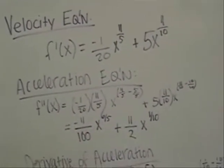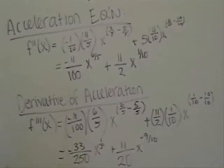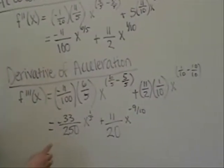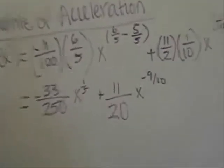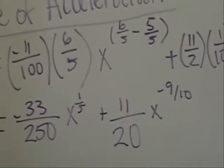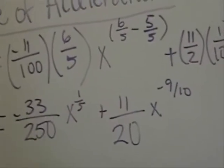Now to find the derivative of acceleration we simply use the same process. Our final derivative of acceleration will be negative 33 over 250 x to the 1 fifth plus 11/20th x to the negative 9 tenths.